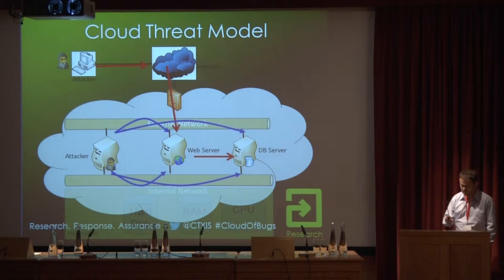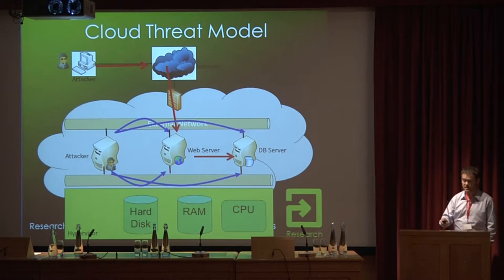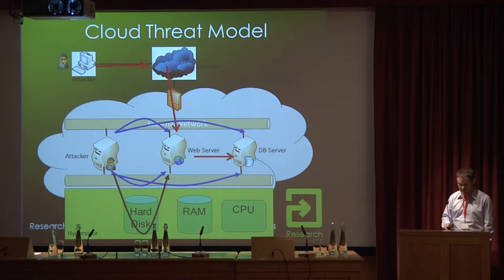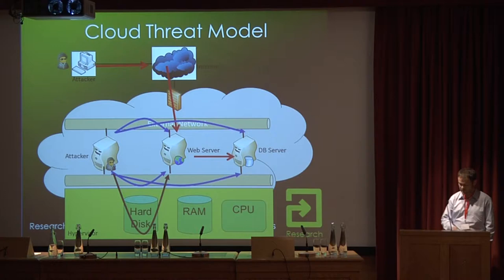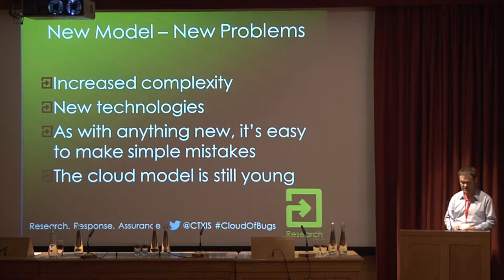There is also the management network and the infrastructure of the whole system, implemented most often by a hypervisor and virtualization technology. This might open up potential attack vectors — as we'll see, some of you may already know about one of the original issues Context found in cloud security, which was about hard disks. The memory, processor, or hypervisor are all potential attack vectors. The new model of cloud infrastructure brings new problems: increased complexity, new technologies like virtualization, and as with anything new, it's easy to make basic mistakes.